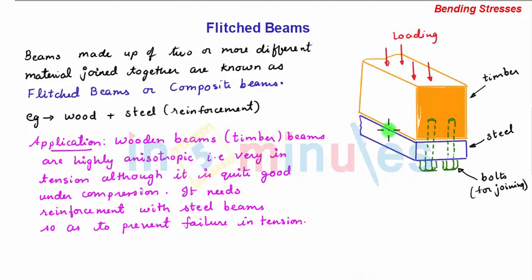This figure shows a typical arrangement of a composite or flitched beam. Here we have a wooden beam which is subjected to vertical loading. Below the neutral axis, the bottommost section is subjected to tension.